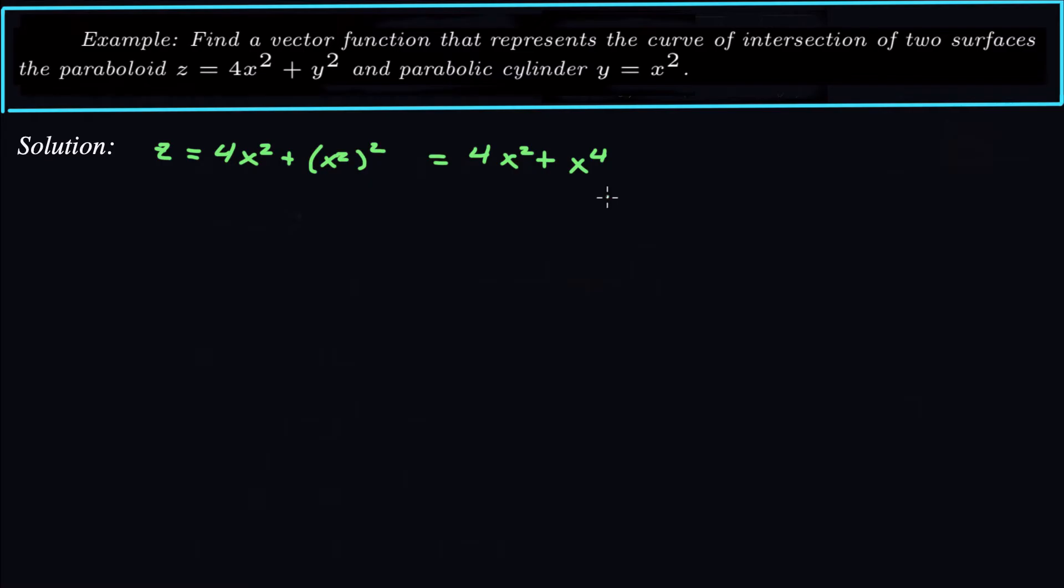So now it looks like we can get everything in terms of x, so why not just let x be the parameter? So let's let x equal t, and then y would equal t squared, and then z would equal 4t squared plus t to the 4.